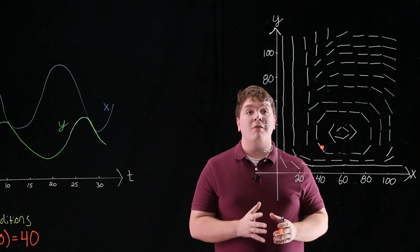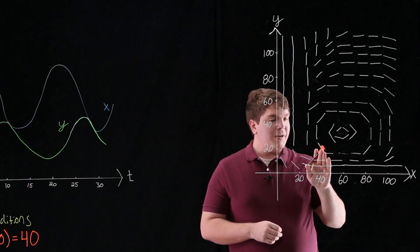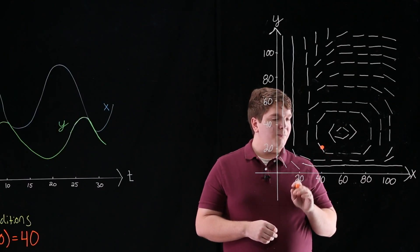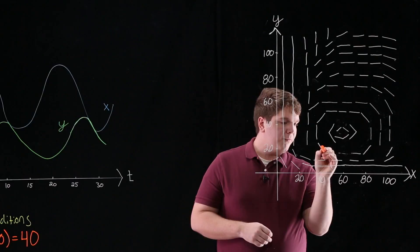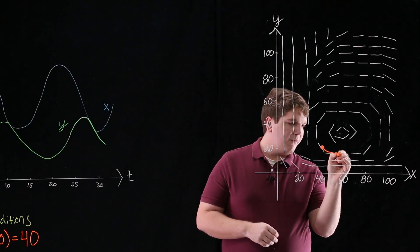Now to sketch our solution, we're just going to follow along the slope field. So as we see, as x increases here, y is going to be decreasing just slightly, and we'll begin to level out.